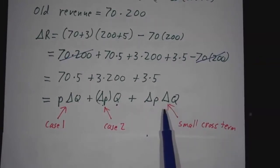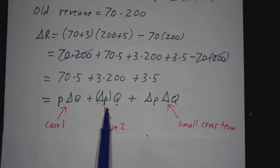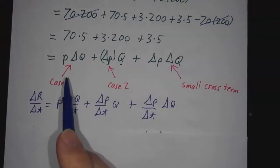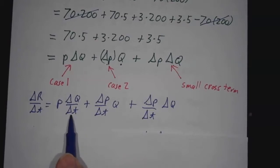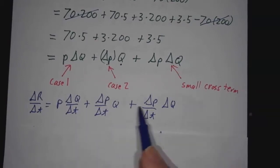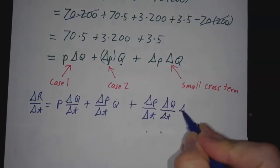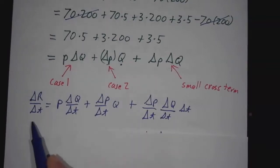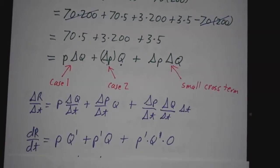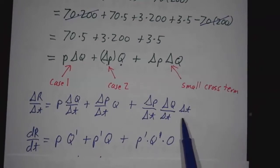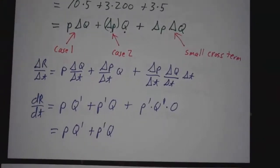In general, delta r equals p times delta q, plus delta p times q, plus the small cross term. To find the rate of change, divide by delta t: that's p times delta q over delta t, plus delta p over delta t times q, plus delta p over delta t times delta q — and we divide that last delta q by delta t and multiply by delta t so it cancels. Taking the limit as delta t goes to zero, this becomes r prime equals p times q prime plus p prime times q — the cross term vanishes. So r prime is simply pq prime plus p prime q.